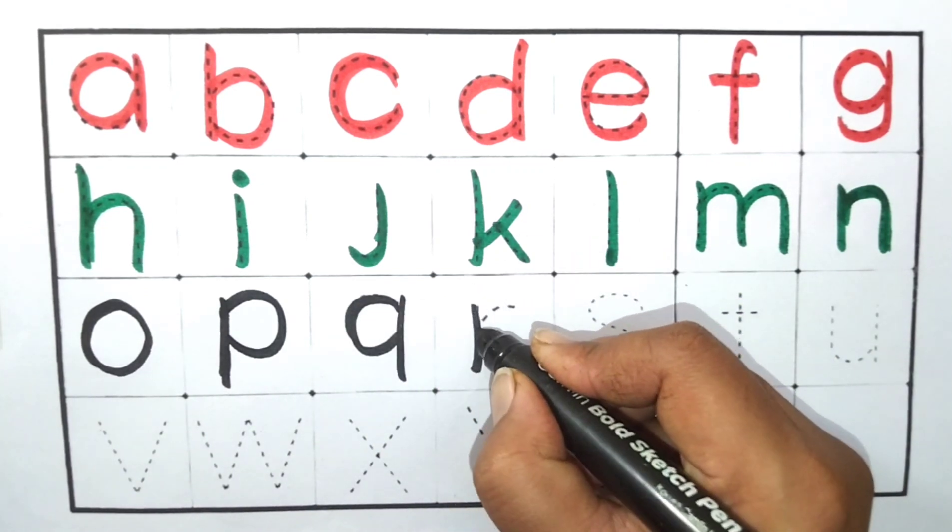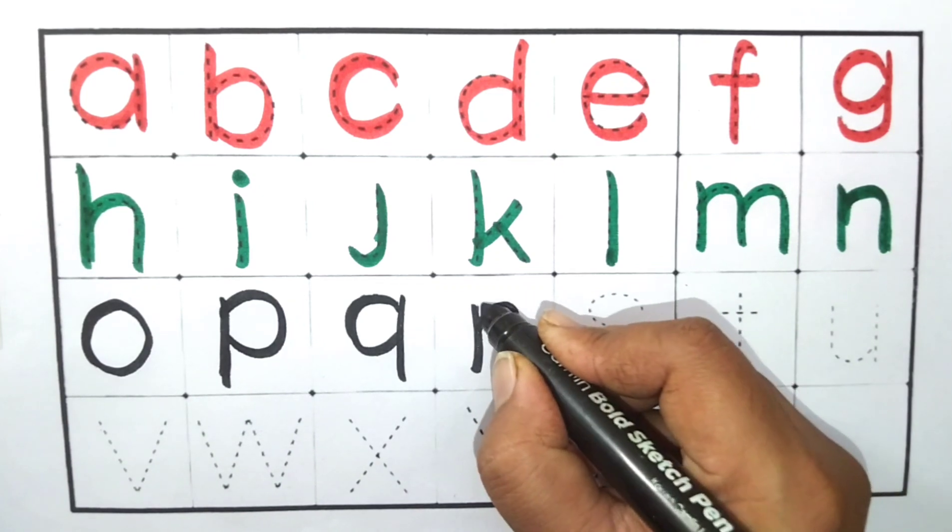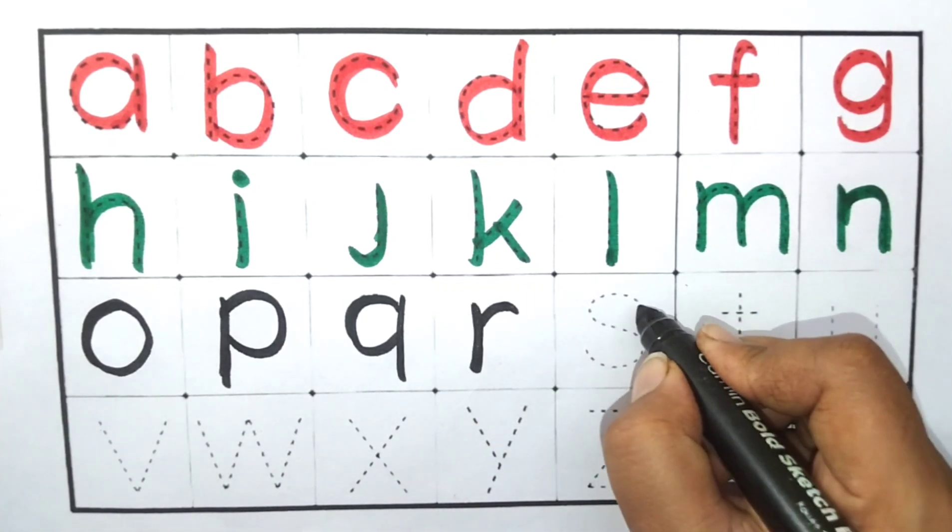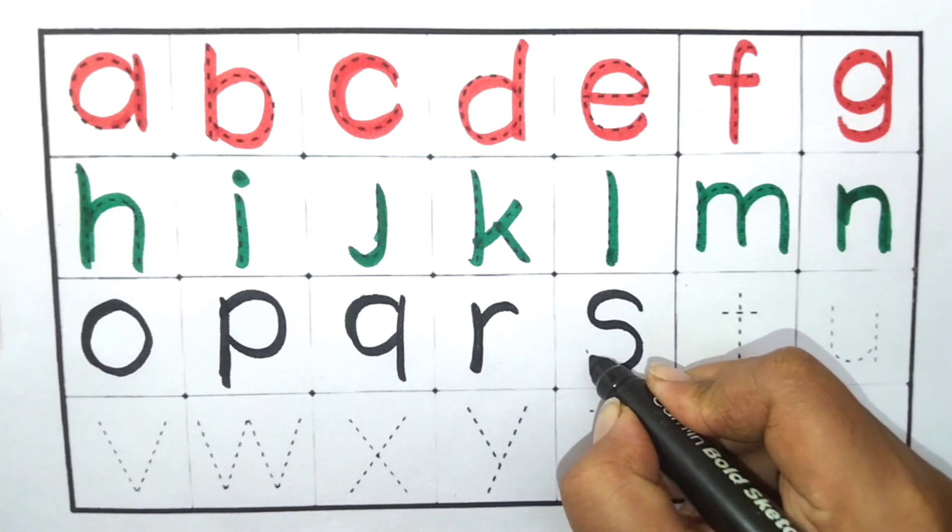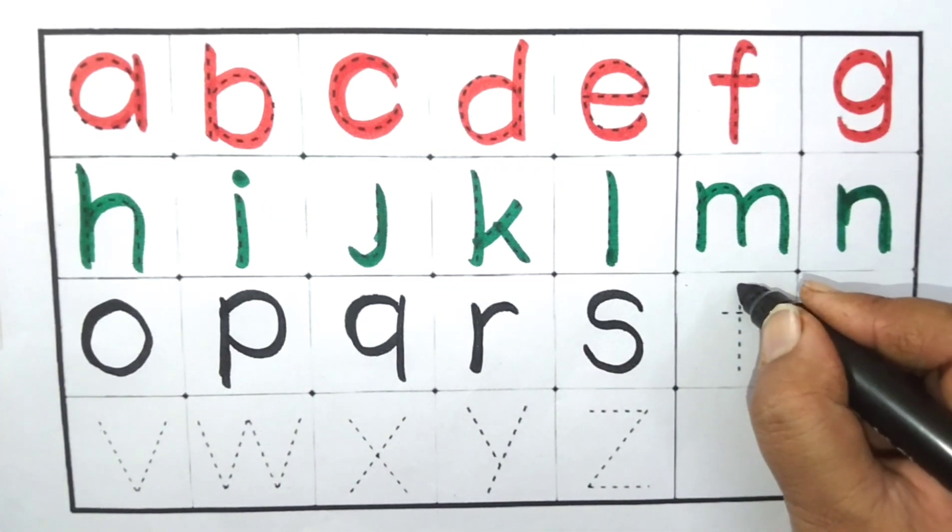R. R4. Rabbit. S. S for sun. Sun means suraj.